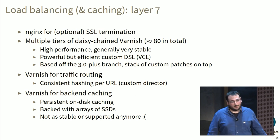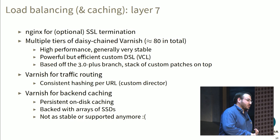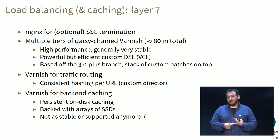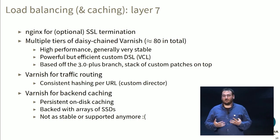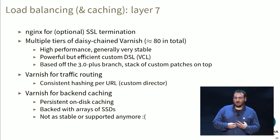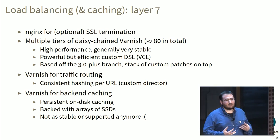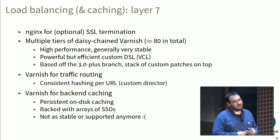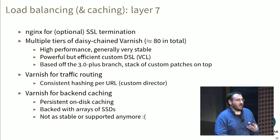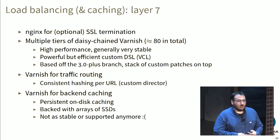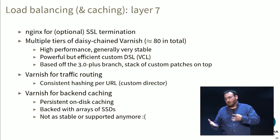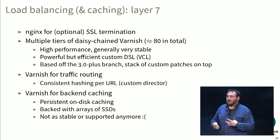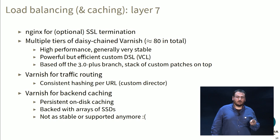One or multiple layers up, for load balancing HTTP requests and caching them: for HTTPS, we use Nginx to terminate SSL within the data center. Then we have multiple tiers of daisy-chained Varnish. Varnish is an HTTP cache and proxy — very high performance, generally very stable. It has a powerful and efficient DSL that gets translated into C directly, letting you manipulate headers and more. We have a custom director based on the 3.0 plus branch with some of our own code, using a consistent hashing algorithm to shard the cache across multiple back-end servers.